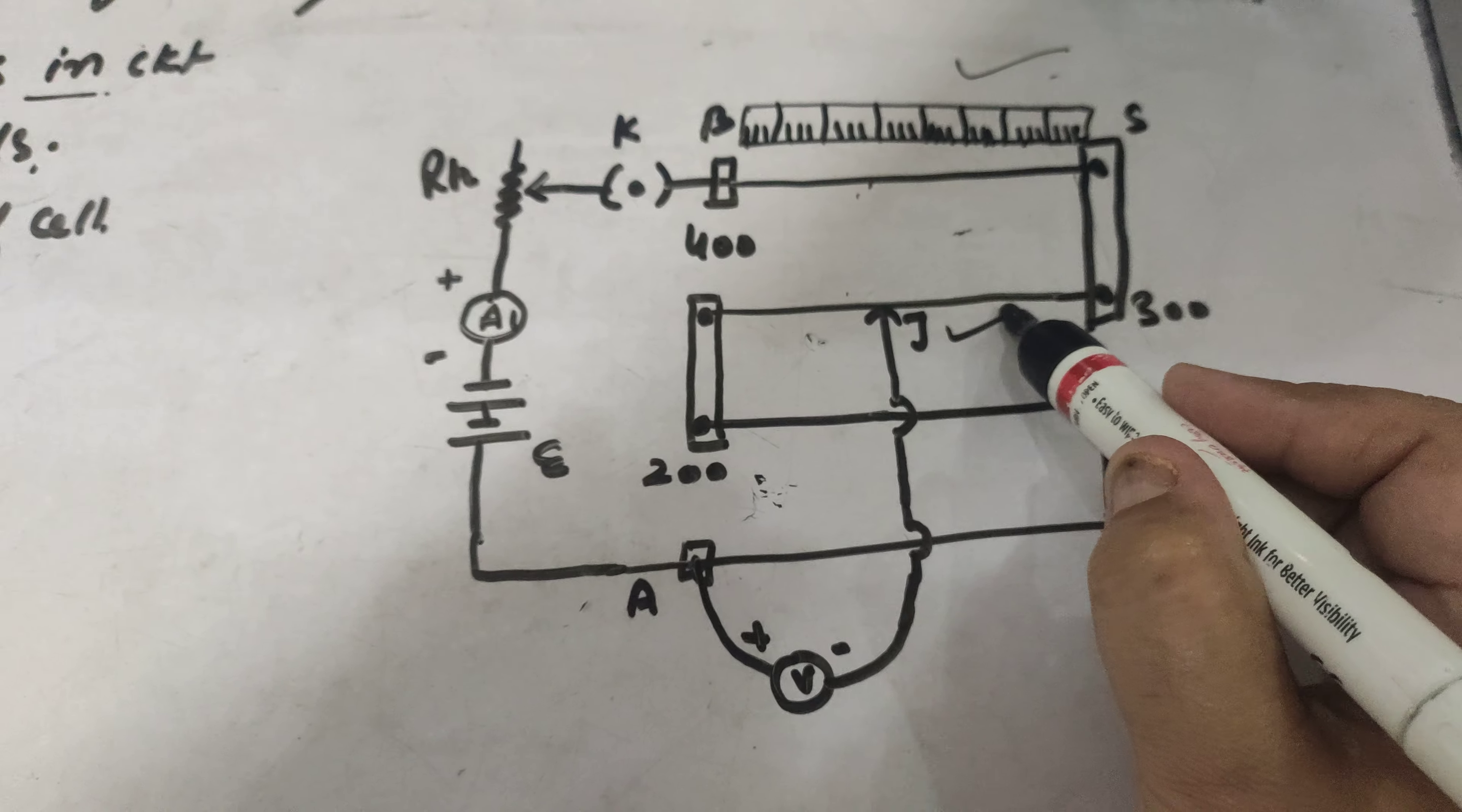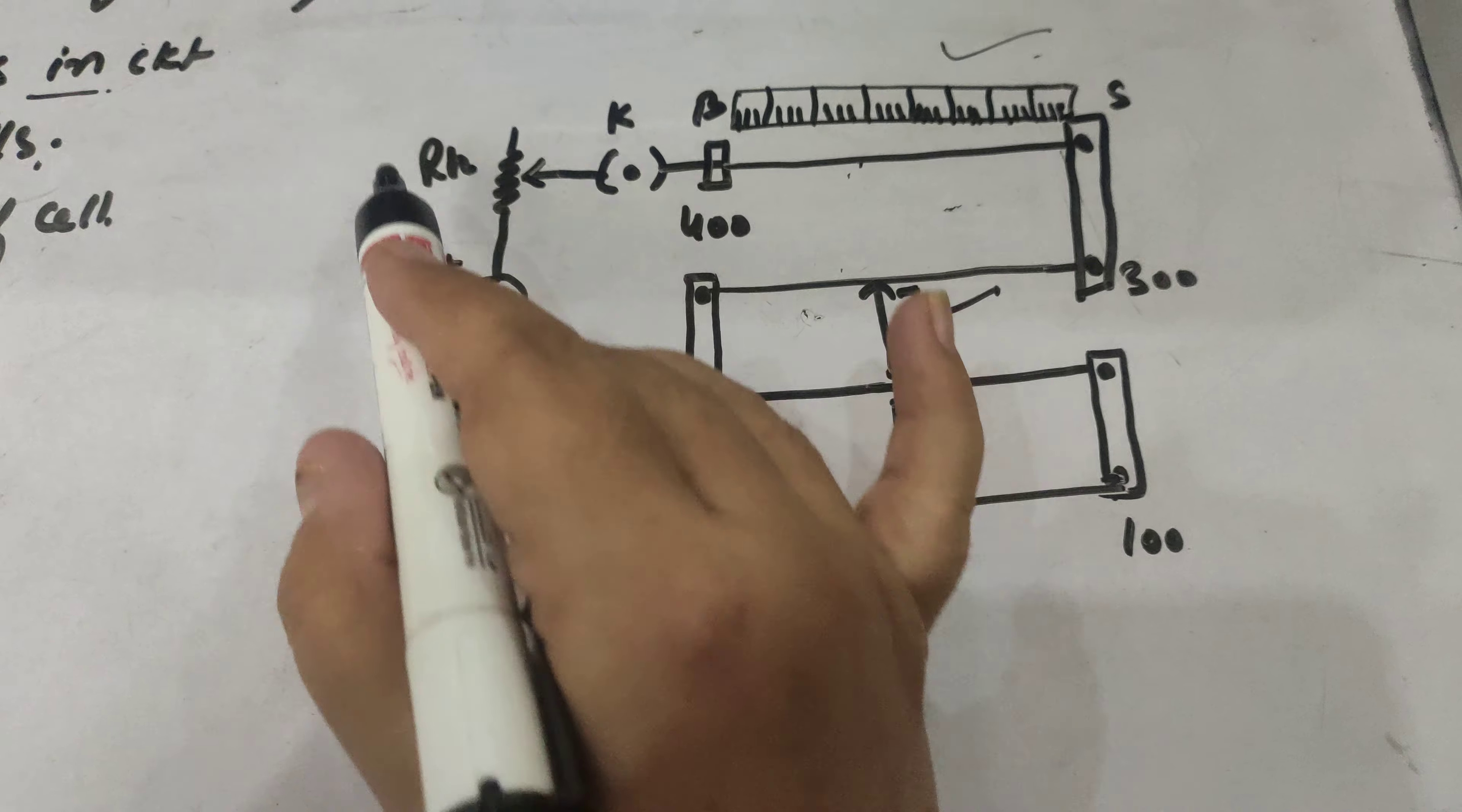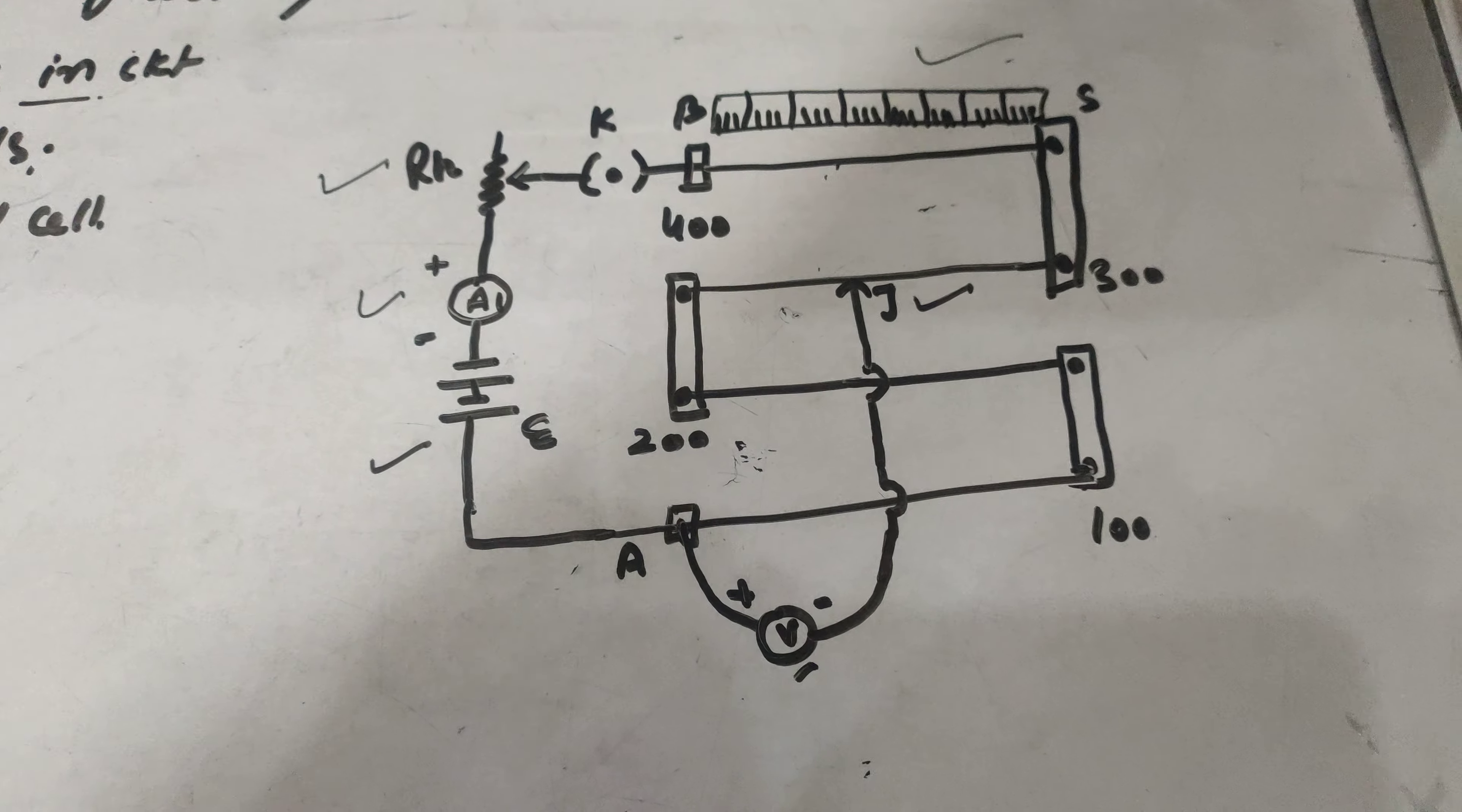This is a jockey J, and this is the voltmeter and ammeter and battery, and this is a rheostat which is used to vary the resistance.